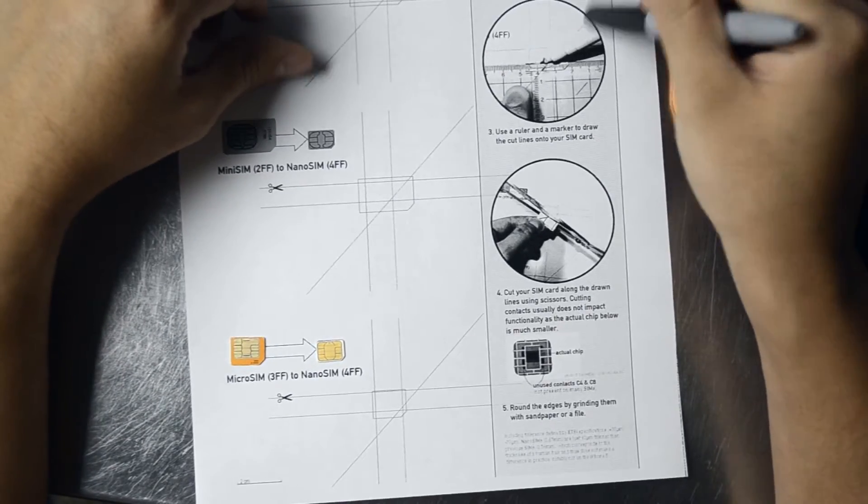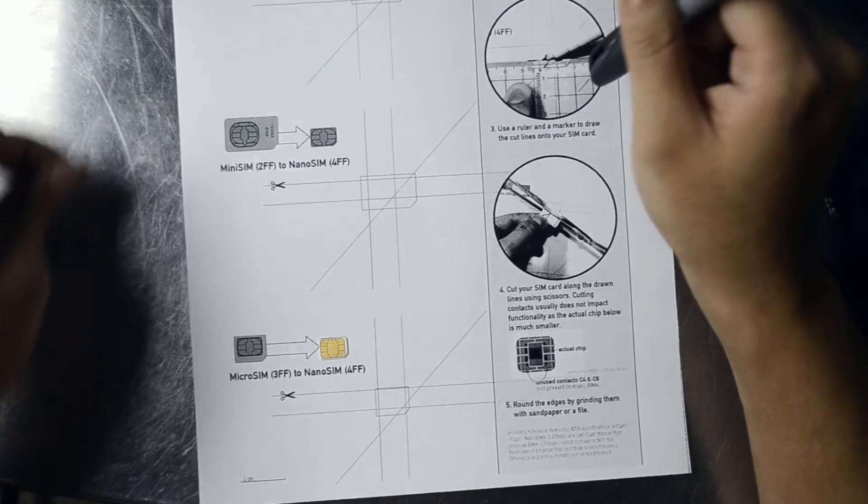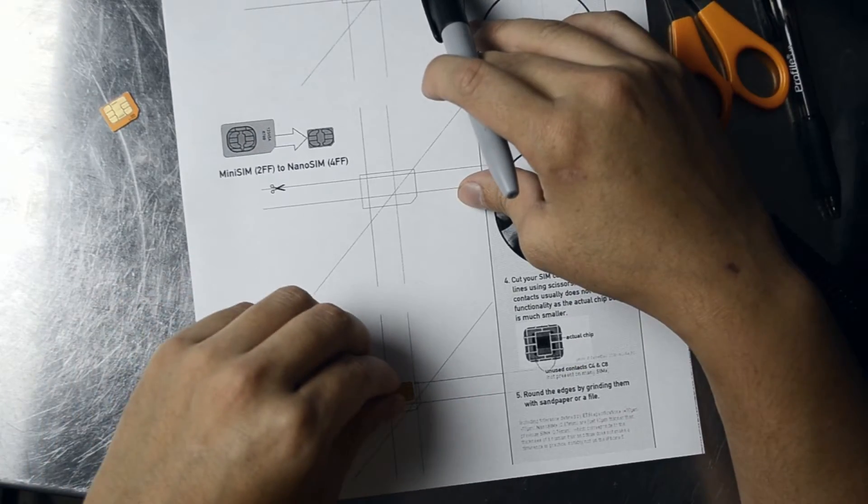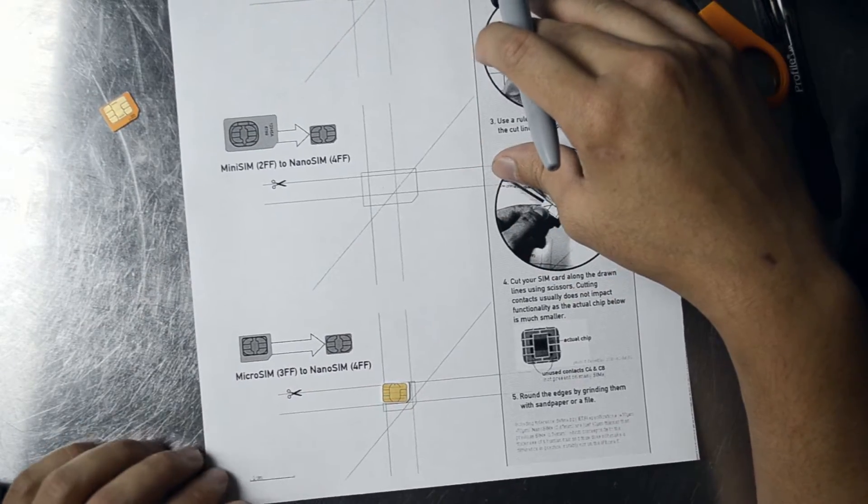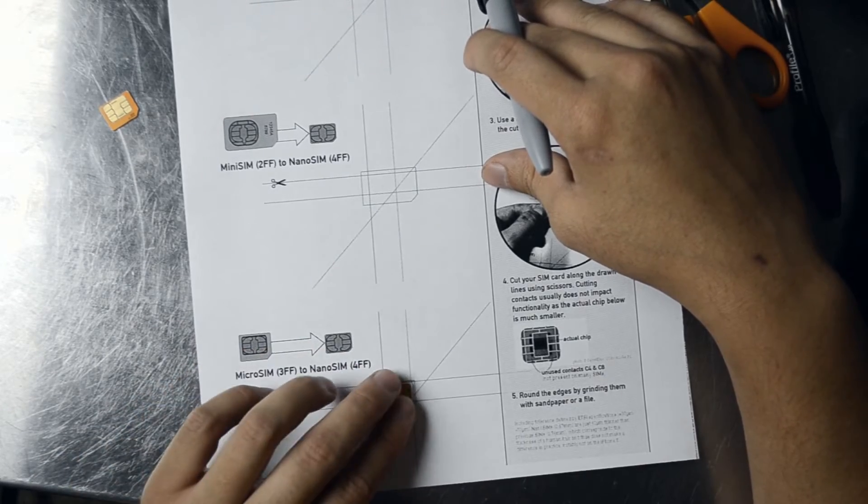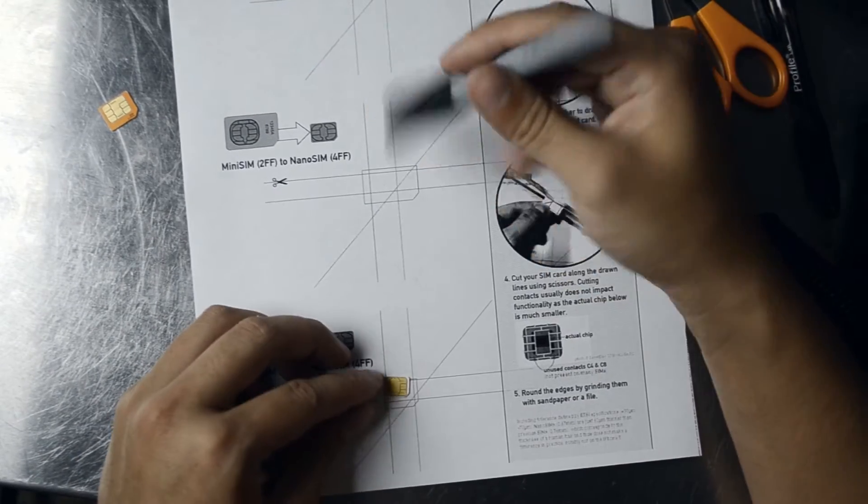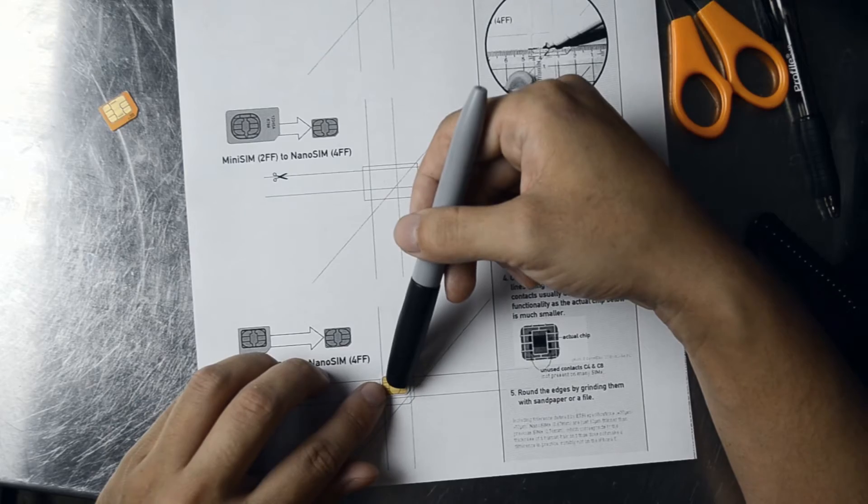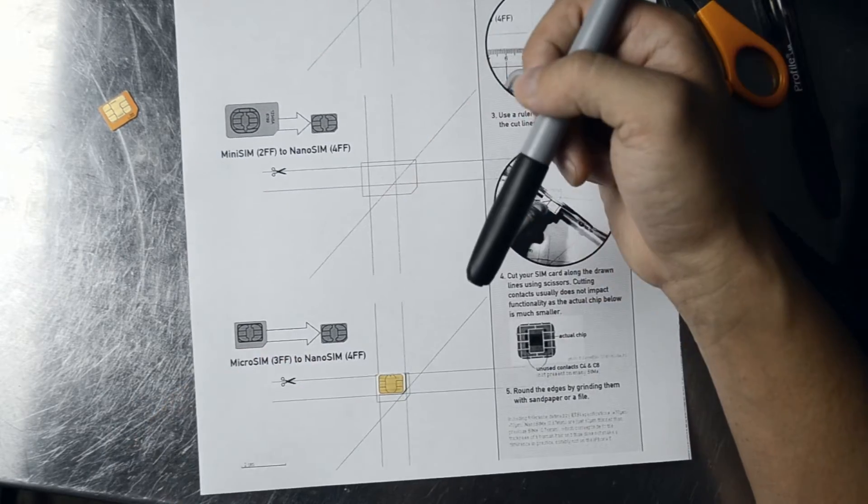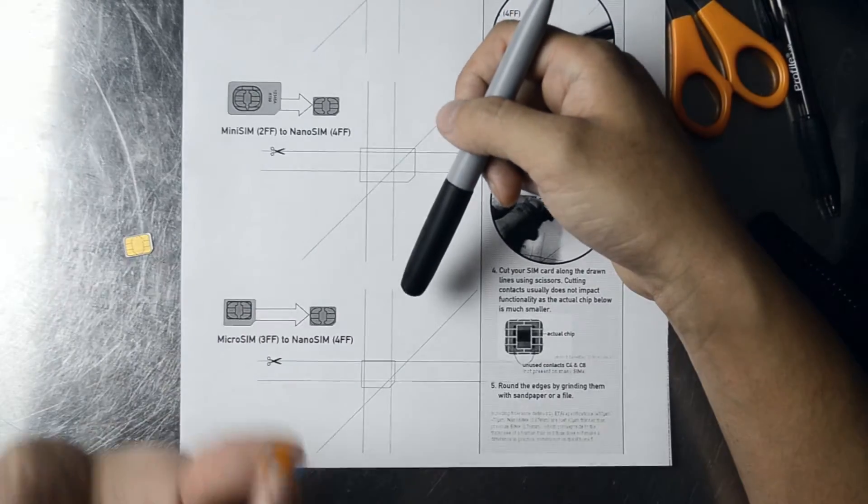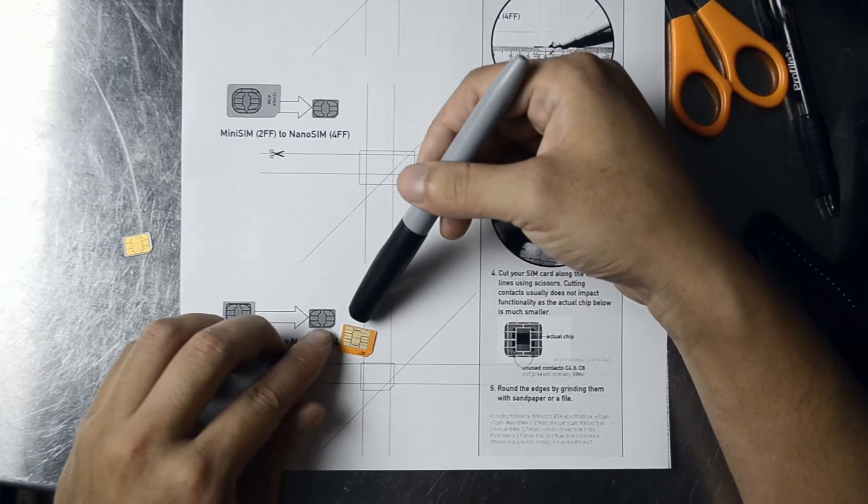Using a marker and a straight edge to make the lines. You can see that the nanoSIM fits right in there. This is the actual one that we're going to cut right here.